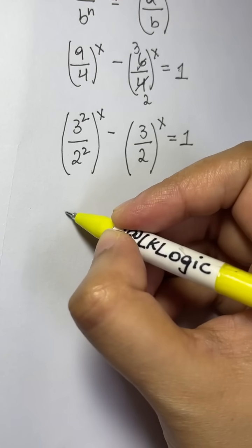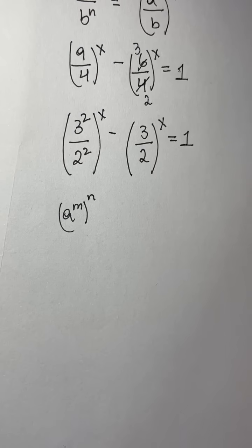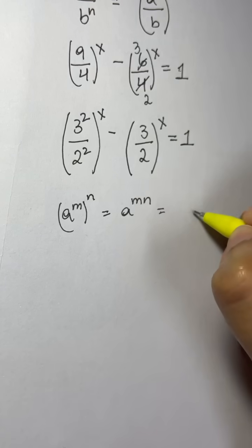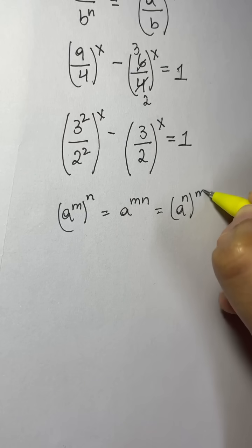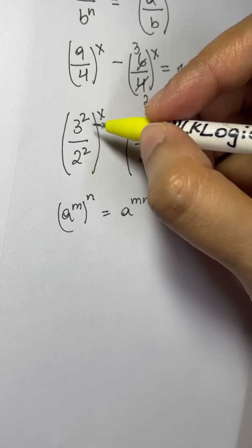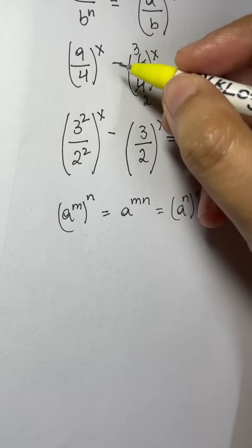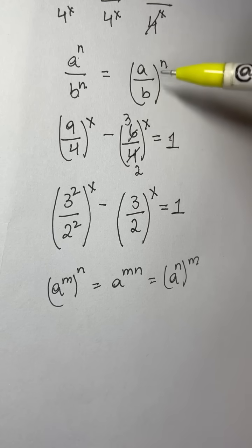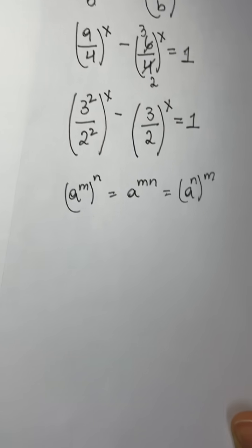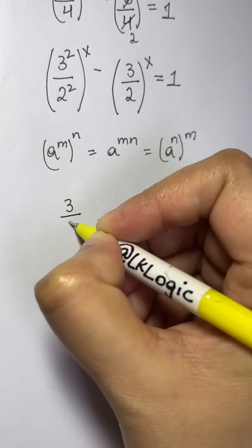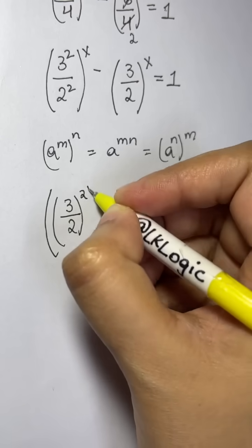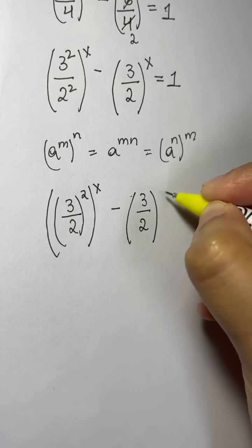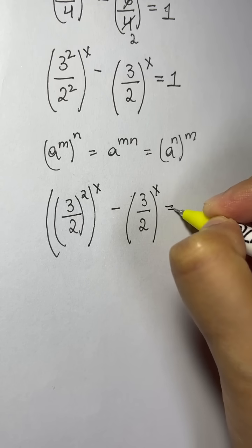The next step uses the rule that a to the power of m, whole to the power of n, means you multiply the powers — and you can also interchange the position of the powers. We'll first combine the powers and then apply that rule. So we get (3/2) to the power of 2x, which is (3/2 to the power of x) squared, minus (3/2) to the power of x equals 1.